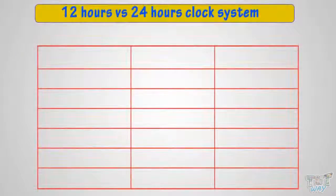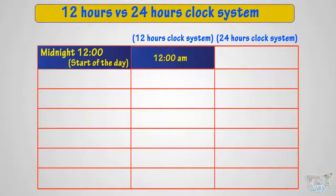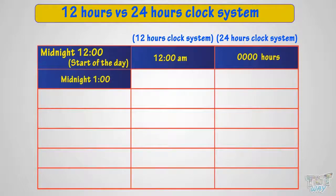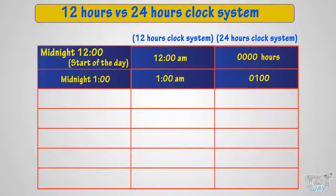Here we have both the 12-hour and 24-hour clock systems. 12 midnight is the start of the day. In the 12-hour clock system, we call it 12 a.m., and in the 24-hour clock system, we call it 0 hours. 1 in the midnight is called 1 a.m. in the 12-hour clock system, and in the 24-hour clock system it is called 0100 — that is, 100 hours.